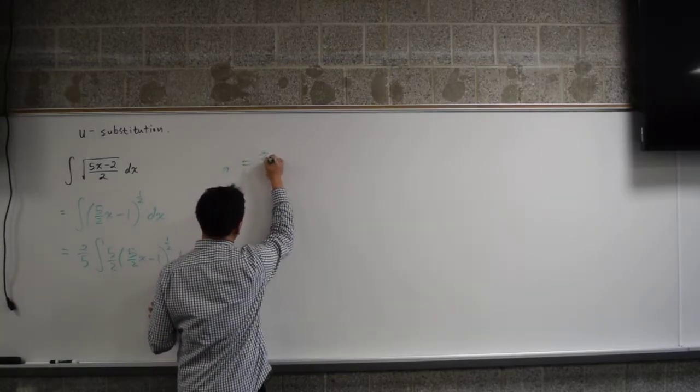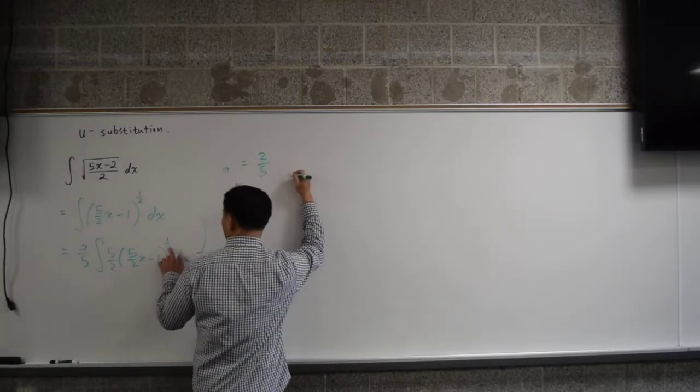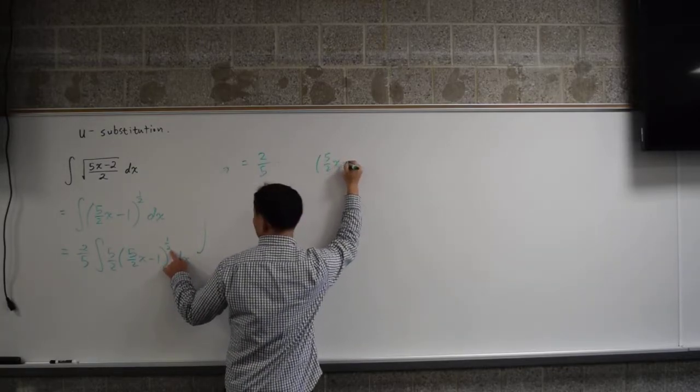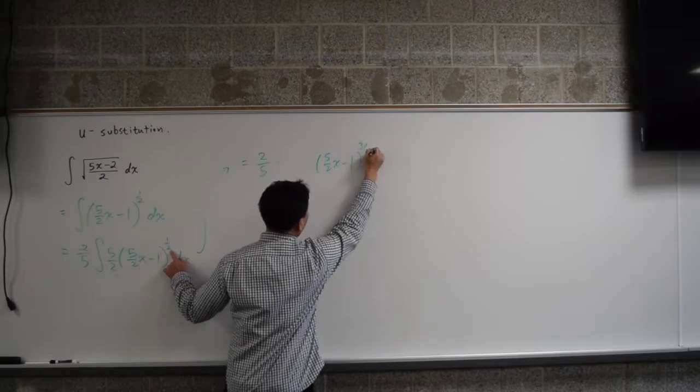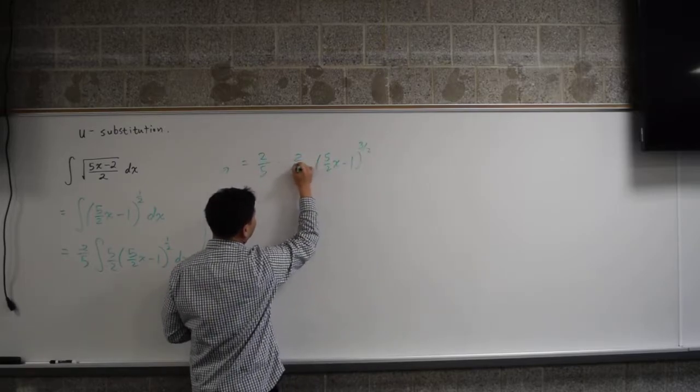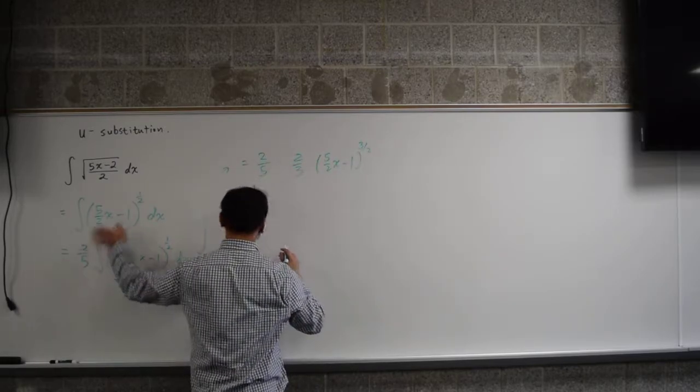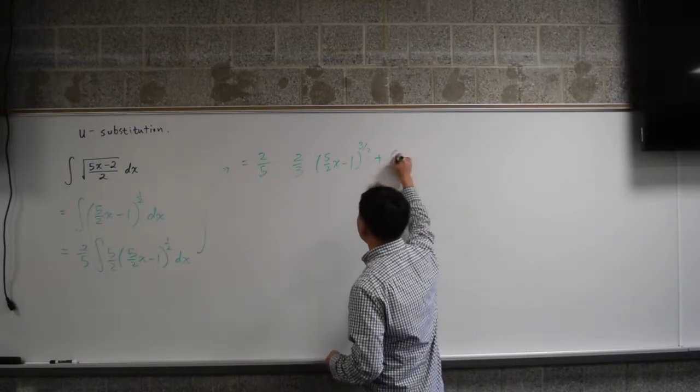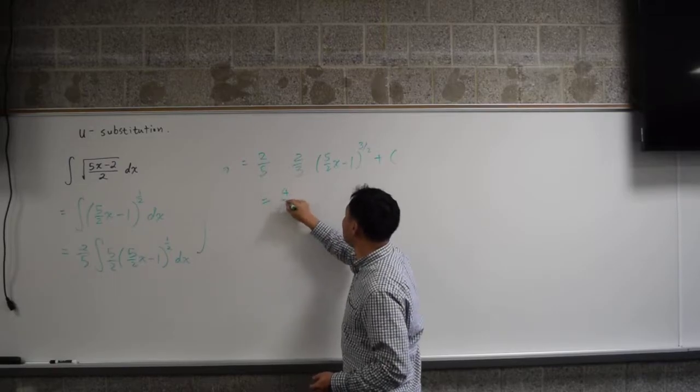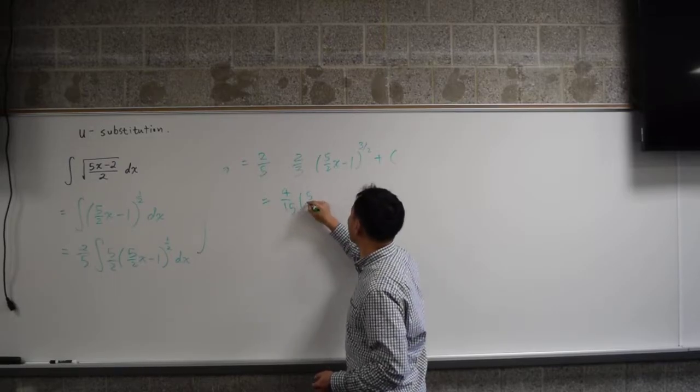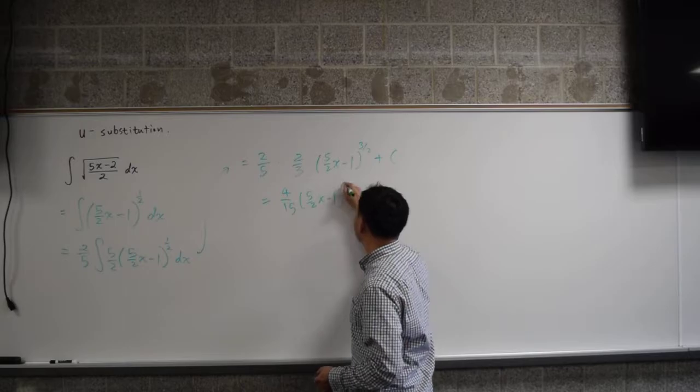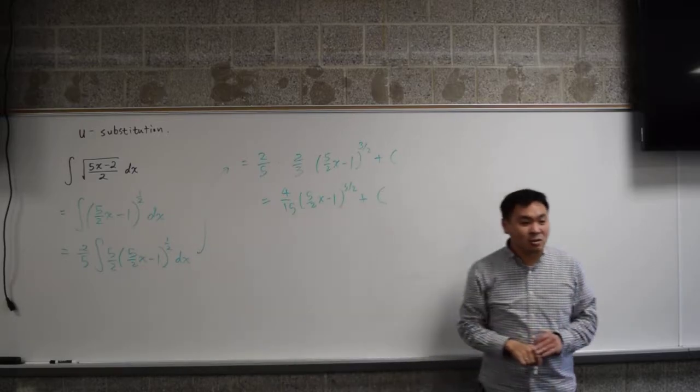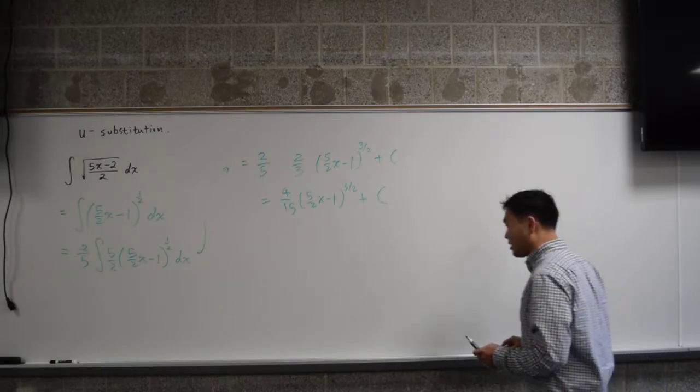That's like 2 fifths. If you add 1 to the exponent, that's 5 over 2x minus 1 to 3 halves, and you have to put the reciprocal in front. This 5 over 2 went away because that's the artifact of the chain rule. And finally, there will be 4 over 15, 5 over 2x minus 1, 3 over 2 plus c. That will be the quick way of finding the answer.